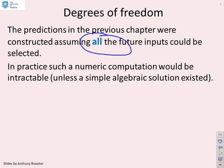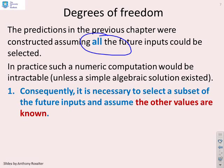Now, the predictions in the previous chapter were constructed assuming all, and this is important, all the future inputs could be selected. We just did a generic prediction structure. However, in practice, such a numeric computation would be intractable, especially if you had very large horizons.